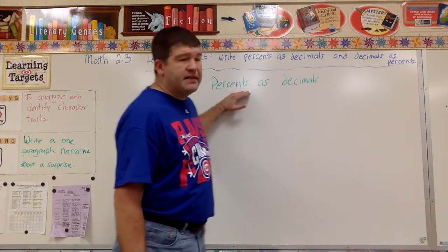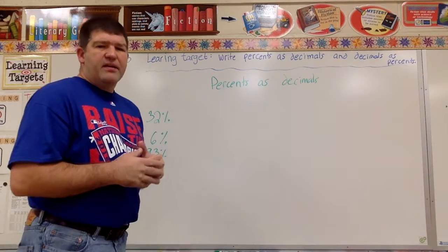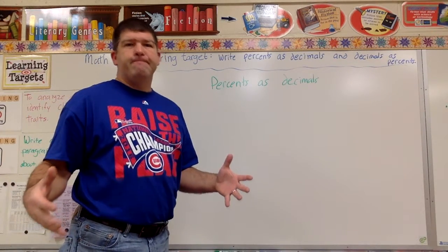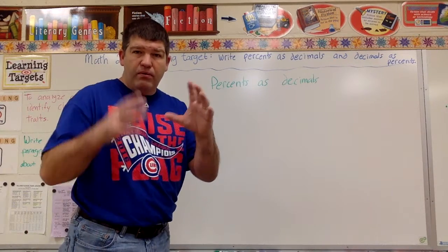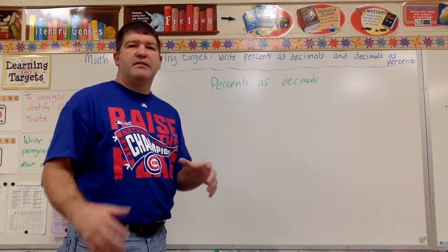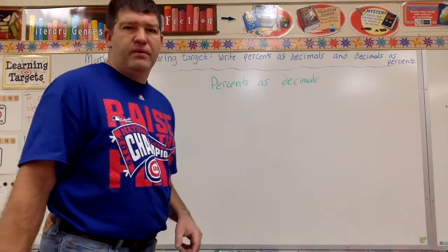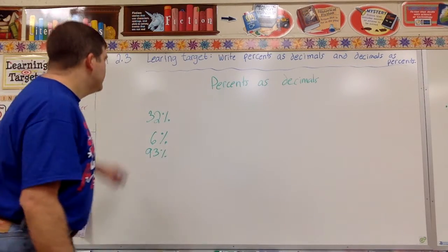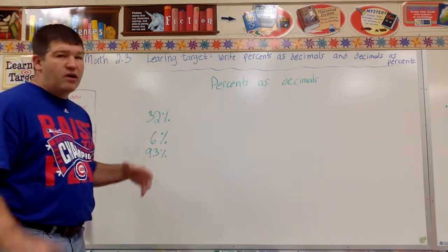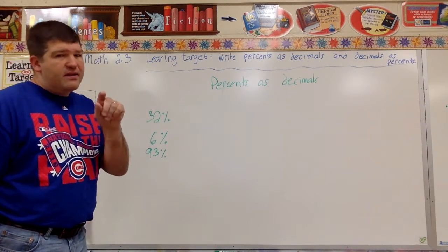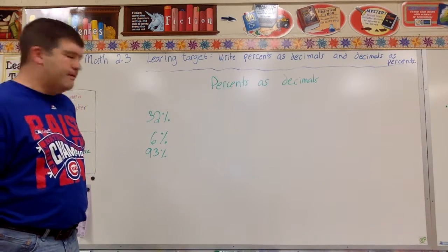What we're doing right now is percents. Remember, a percent is just a part of something. If I do 100 percent, I do it all — like a fraction that equals a whole. If I have less than 100 percent, I have just a part of the whole. Here I have 32 percent, 6 percent, and 93 percent. The 93 percent is almost the whole thing, 6 percent is very small, and 32 percent is a little less than half.